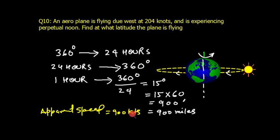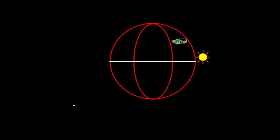Here, the aeroplane is experiencing perpetual noon, which means this noon never ends. Imagine this aeroplane is flying due west in this direction. Similarly, the sun is also moving in this direction, and this is the apparent motion of the sun. Here, this is the North Pole and this is the South Pole.